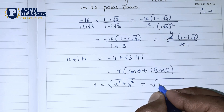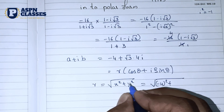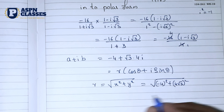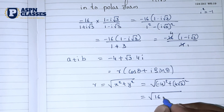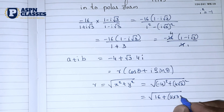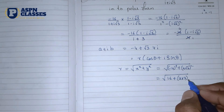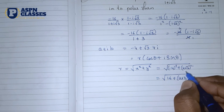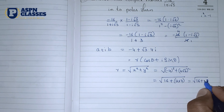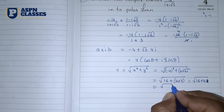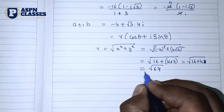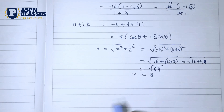Here x equals minus 4, so x squared is minus 4 squared which is 16. And y equals 4 root 3, so y squared is (4 root 3) whole squared. Simplifying: 4 squared is 16, and 16 into 3 is 48. So r equals square root of 16 plus 48, which is square root of 64. The answer is r equals 8.